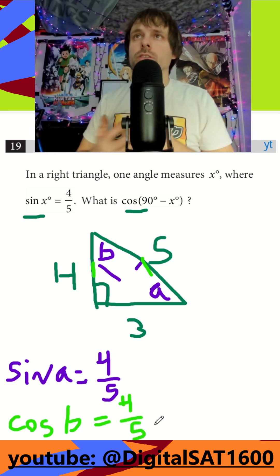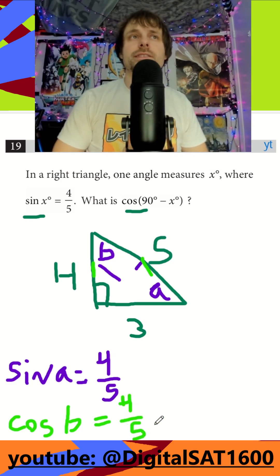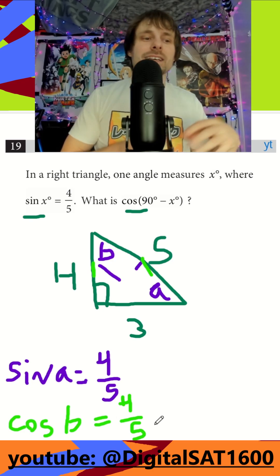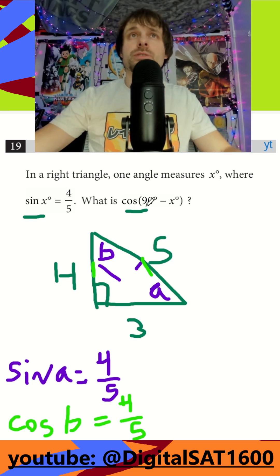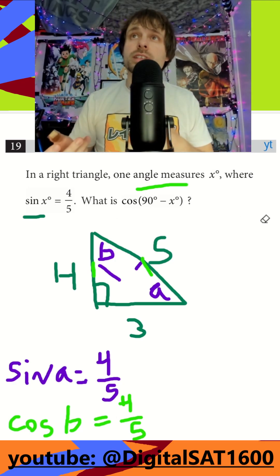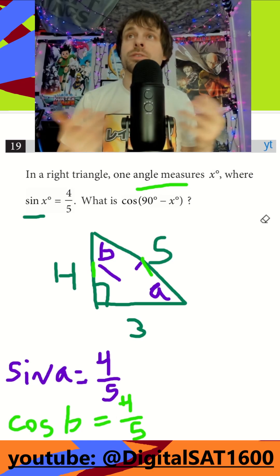So all this triangle kind of helps us remember is anytime we see this, like here's a sine of this angle, here's a cosine of another angle, a lot of times you'll see them say 90 minus X. They're actually just demonstrating the relationship between sine and cosine with complementary angles, angles that add up to 90.